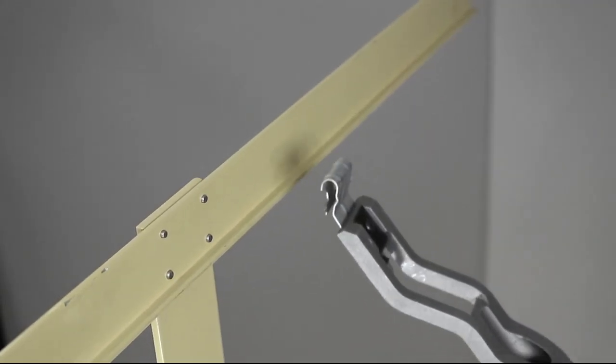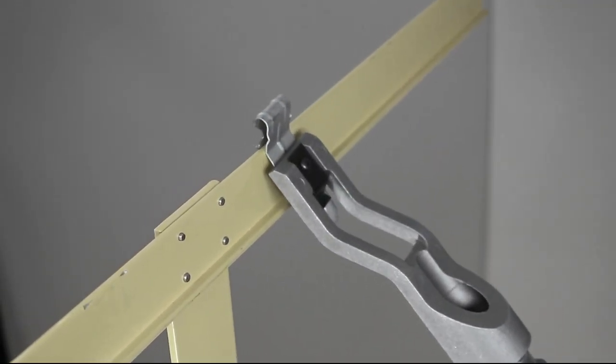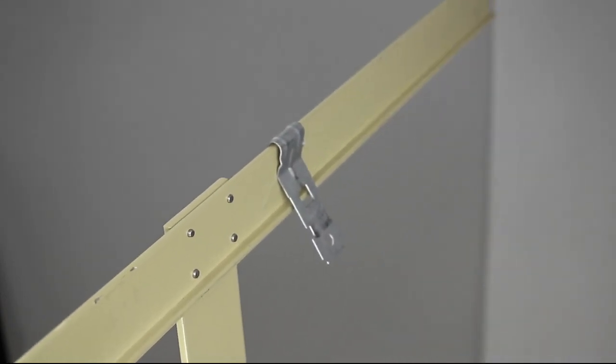Next, just raise the clip to the ceiling joist, hook the clip over the joist, and pull down to release the clip from the tool.